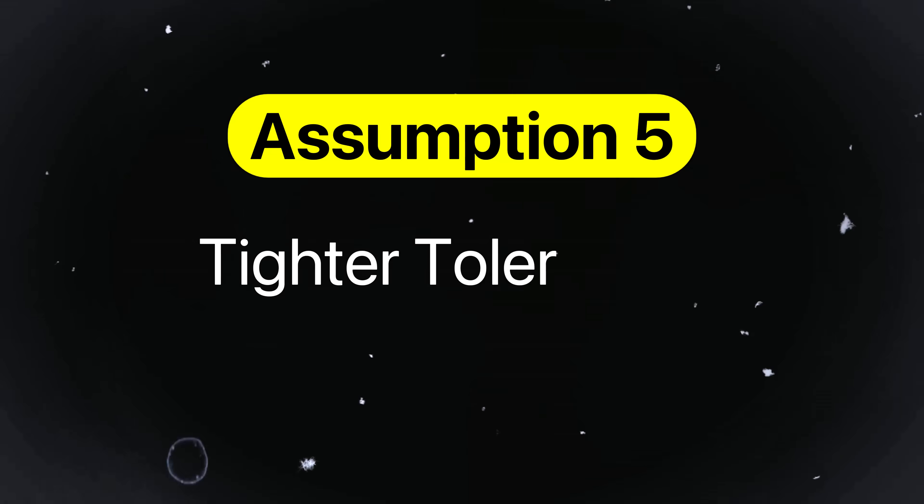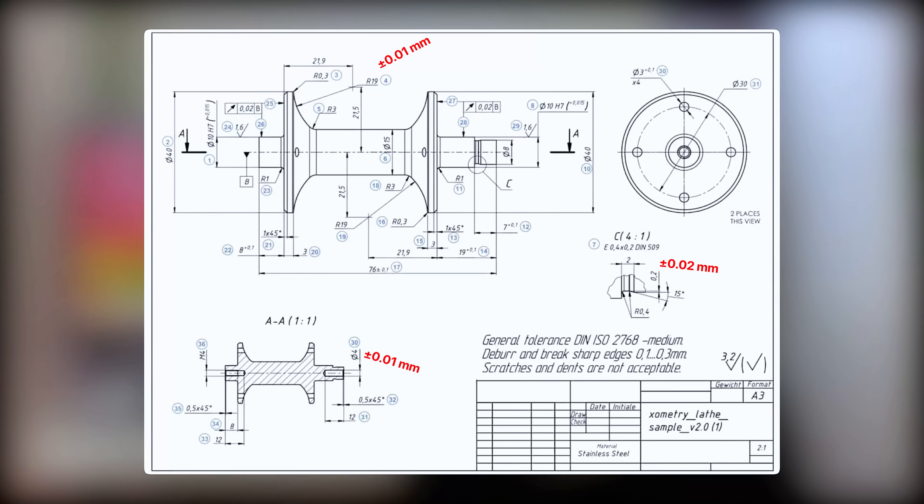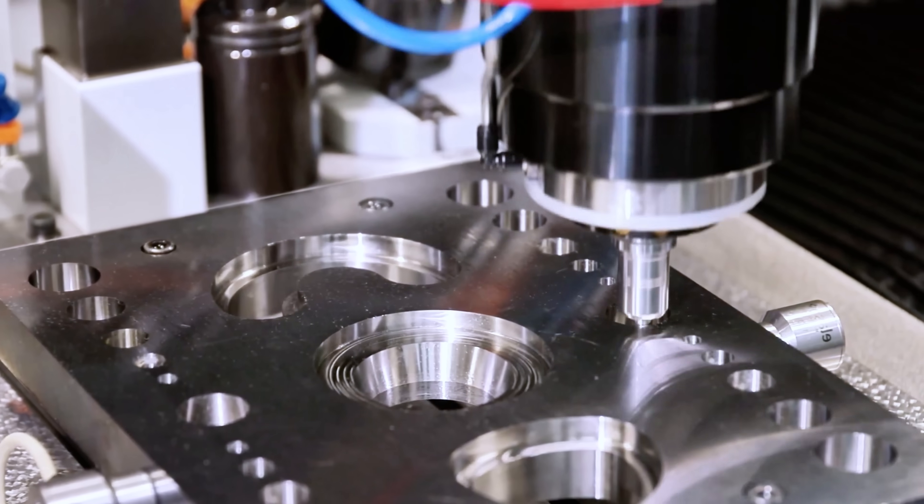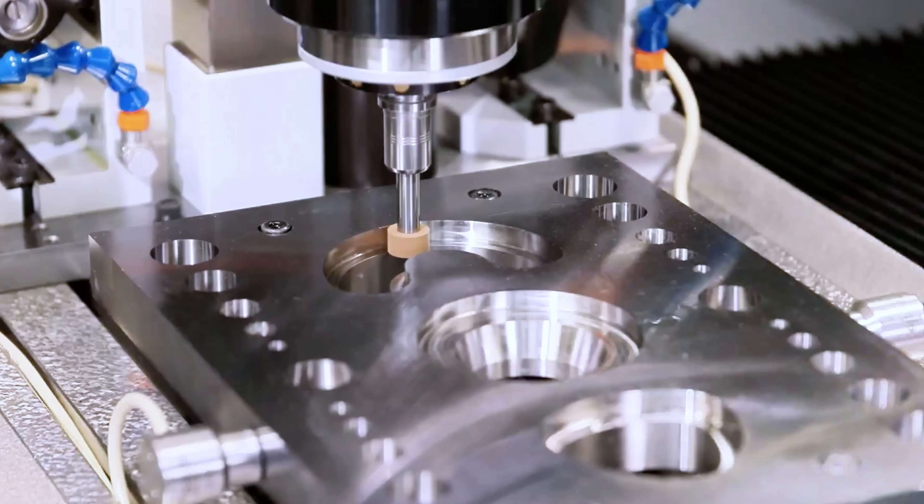Assumption number five is tighter tolerances equals better quality. That's true to a certain extent, but when we design, there are multiple constraints we have to satisfy. It's tempting to tighten tolerances for every dimension, but tighter doesn't mean better — it means more expensive. For example, machining a bore to ±0.005 mm instead of ±0.05 mm could require a jig grind or CNC finishing instead of a simple drill pass, multiplying cost and lead time. Tight tolerances can also lead to higher scrap rates during quality control inspections. Instead, consider functional requirements — if a clearance hole for a bolt doesn't require a precision fit, call a loose tolerance and let the manufacturer work efficiently.